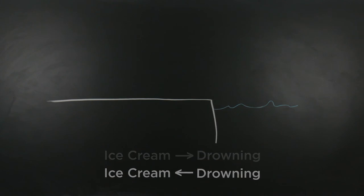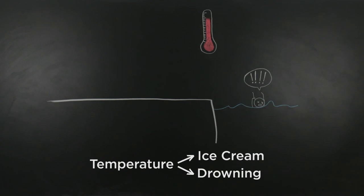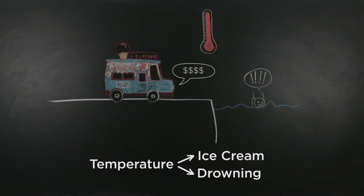But actually the most reasonable explanation is that a third variable, such as temperature, causes both of these things to increase. As the weather gets warmer, more people swim, and more people make profits off of sweaty children.